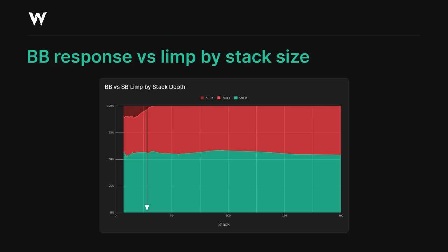You could make the argument that another pivot point exists somewhere around 60 to 65 big blinds, but the changes to the big blind's frequencies really aren't significant until we start to get to those shallower stack regions. So I think it's easier to just use one pivot point for this node.